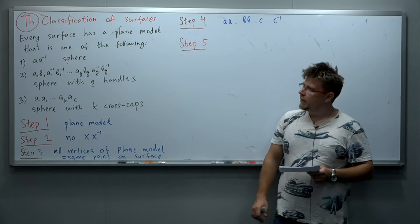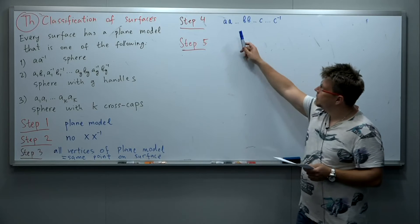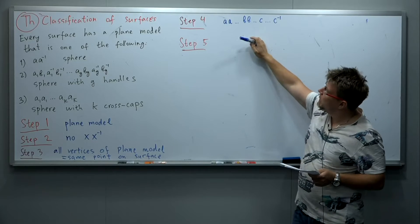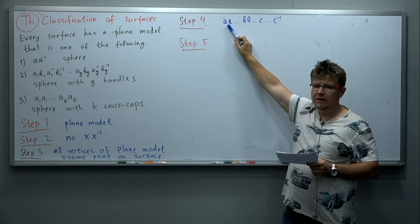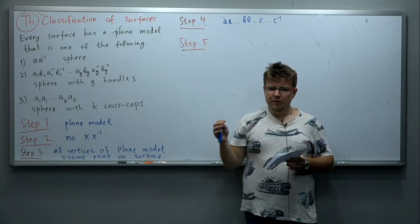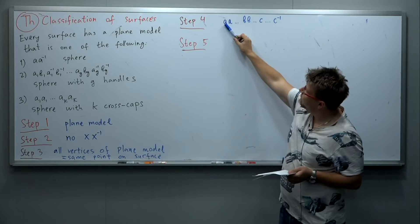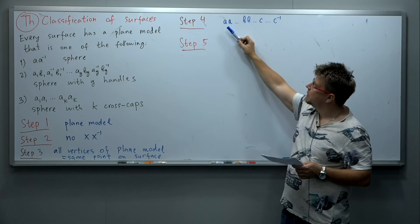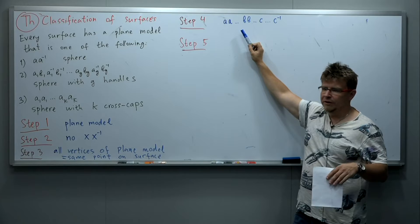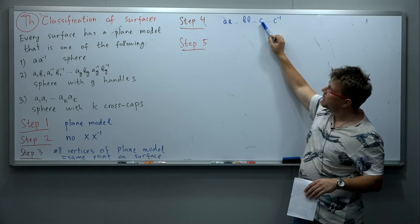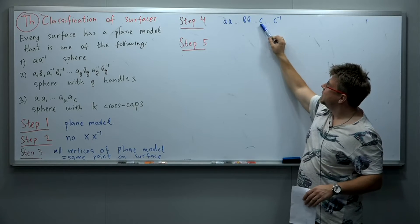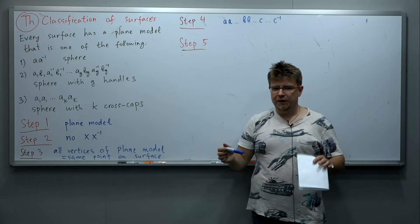We have done four steps of the classification theorem of compact surfaces. After step four, we proved that every surface has a plane model, and whenever a label appears twice without the inverse, those two appearances are next to each other — so A and A sit next to each other, B and B next to each other, with possibly other labels between them. Step four does not apply to labels that have inverses, so if we have some label C appearing with its inverse, C and C⁻¹ are not going to be next to each other.